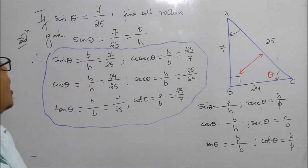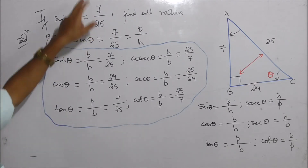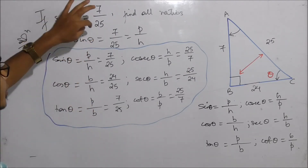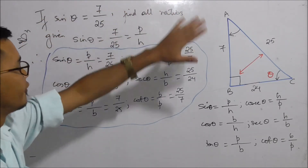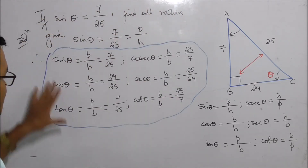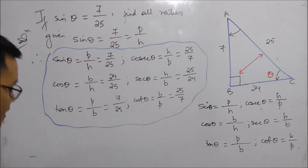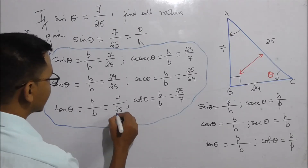So if we have the right angle triangle ABC and sine theta equals 7 by 25, we can find all the trigonometric ratios as shown.